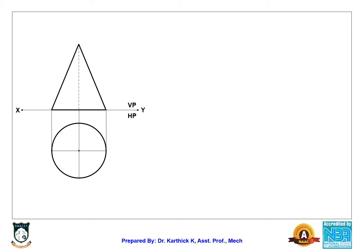The next step is to give the dimensions: diameter is 50 mm and height is 60 mm. Then we give the notations for the drawing. The notation points are labeled A, B, C, D and the center is O. The notation should always be in the anti-clockwise direction.